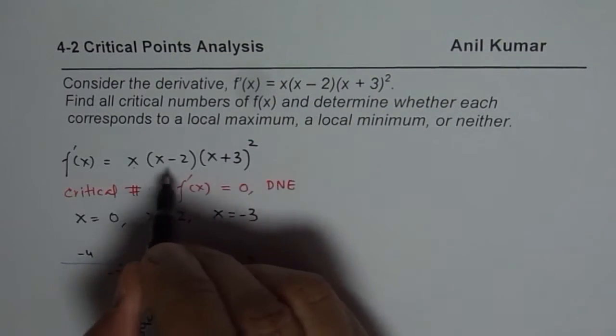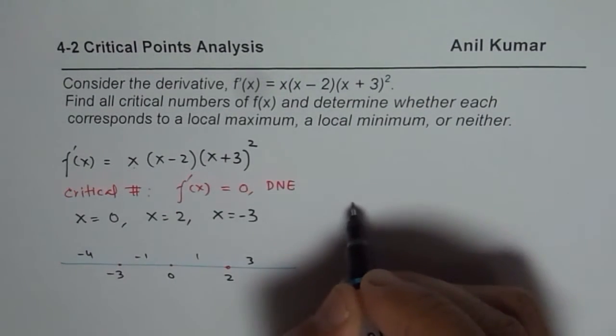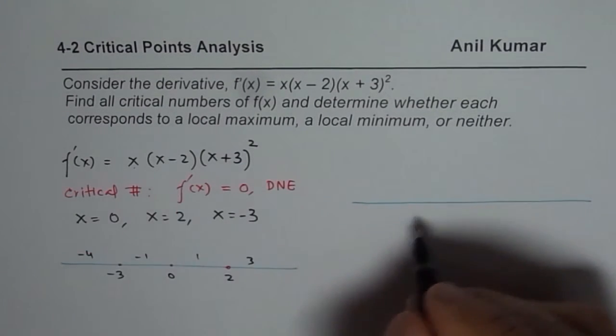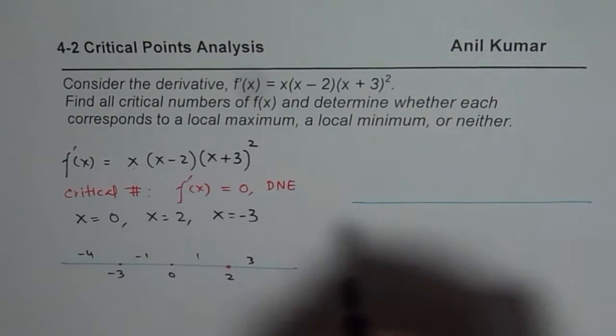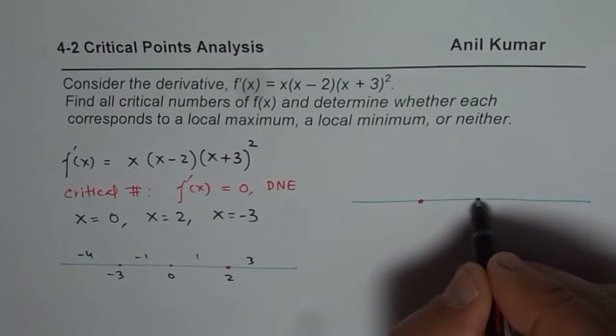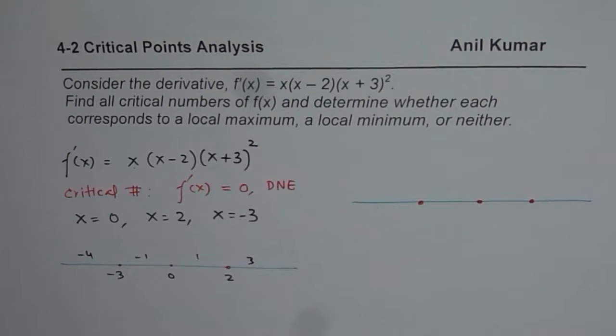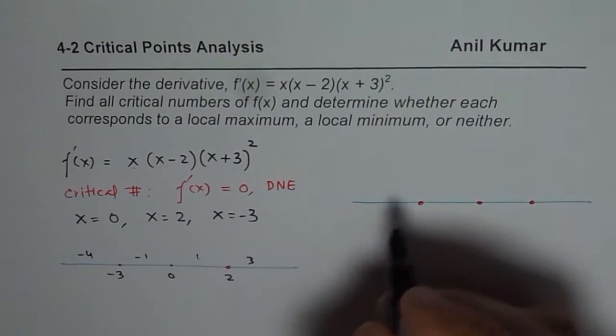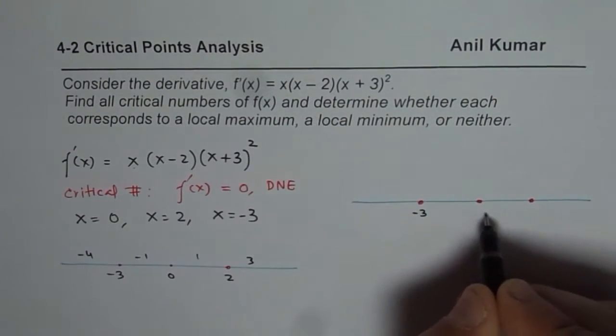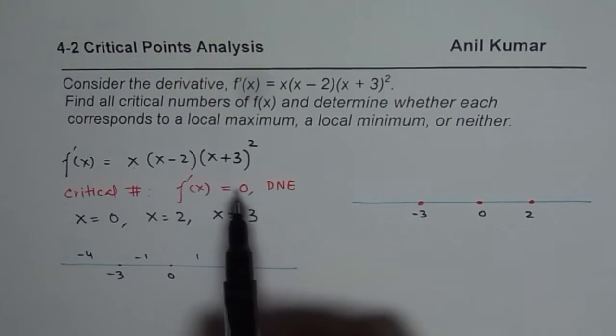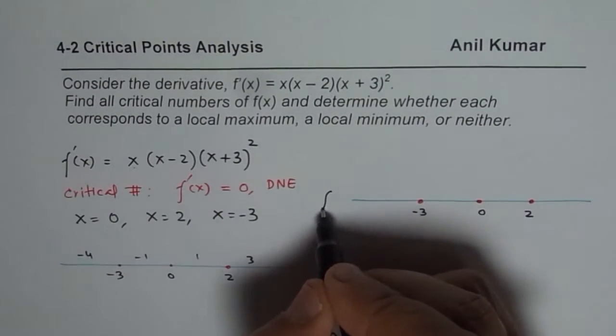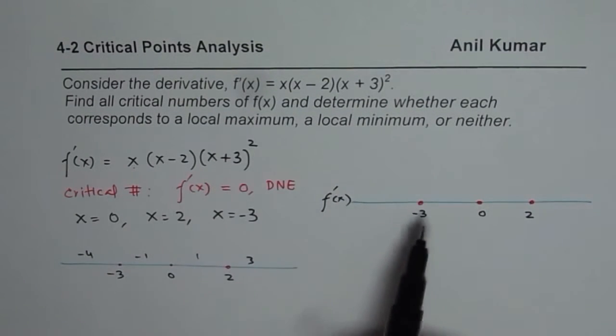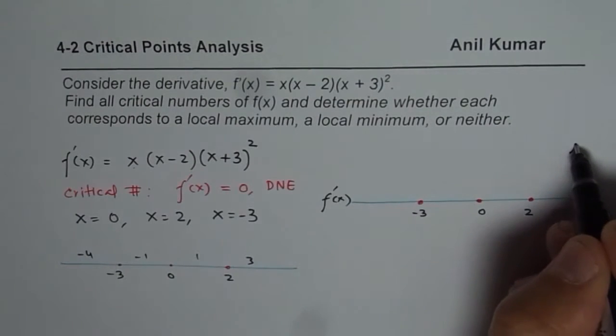Other approach is, we can actually sketch the derivative itself. So, let me sketch here and find the solution. We have three critical numbers: x = 0, x = 2 and -3. The first one on the leftmost side is -3 and then we have 0 and 2. You'll also observe that the derivative, f'(x), is degree 4. So, if I am going to sketch, both sides are going to be upright.